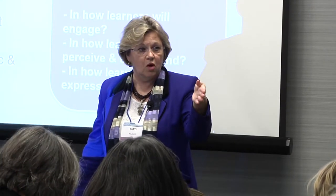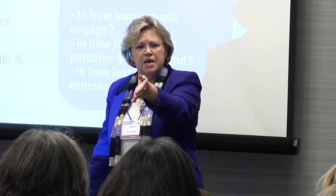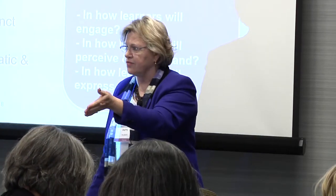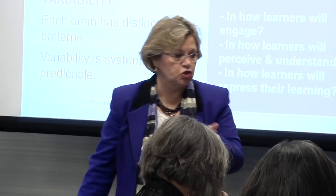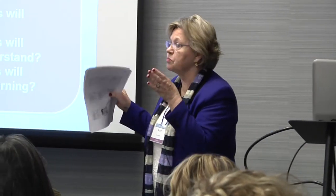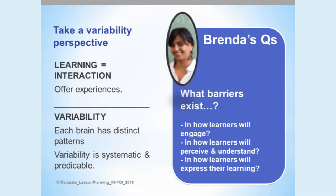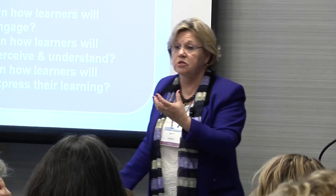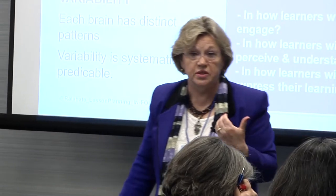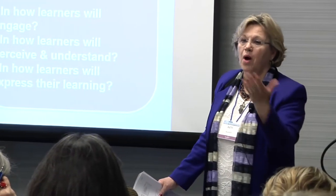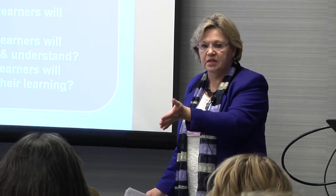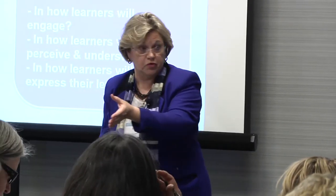This is the piece of UDL lesson planning where you're thinking about learner variability the whole time — but specifically after you've written the goal, you think: this is what I want them to do, this is how I'm going to measure it. Where are the barriers? Who's going to have difficulty, and how? How can I prepare ahead of time? The questions Brenda asks are: where do those barriers exist, how will I engage all the learners the whole time, how will they perceive and understand the information — for example, do I have English learners who need vocabulary support built into the lesson?